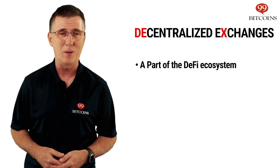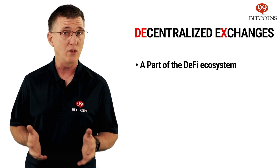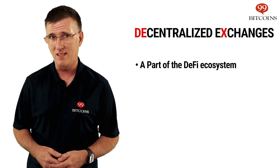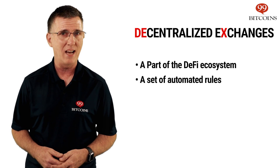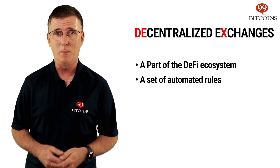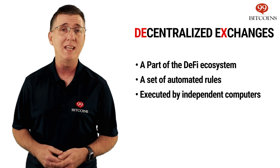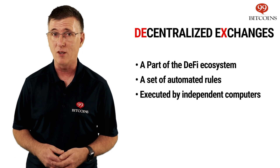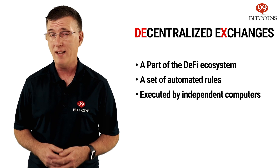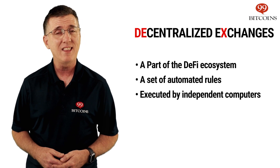We'll leave the links in the description. Unlike a traditional exchange that requires a controlling company and centralized servers to operate, a DEX consists of a set of smart contracts deployed on a blockchain. In simple terms, it's a set of automated rules that are executed by a network of independent computers without any central entity controlling it. And if you want to learn more about smart contracts and how they work, you can take a look at our What is Ethereum video.